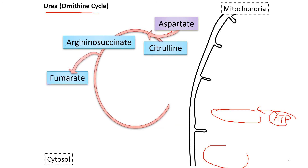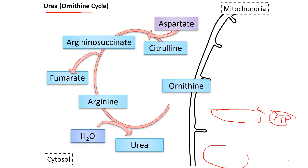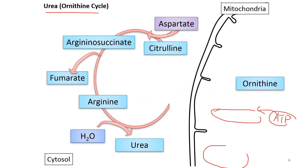Argininosuccinate is then cleaved to form arginine — fumarate is cleaved off in the process. Upon hydrolysis, arginine is turned into urea, while the leftover is converted back into ornithine, which is recycled back into the urea cycle.